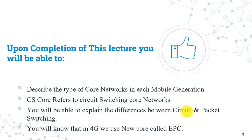You will know that the term CS refers to circuit switching. You will be able to explain the differences between circuit and packet switching. You will know that in 4G we use a new core called EPC, which stands for Evolved Packet Core. Let's start the lecture now.